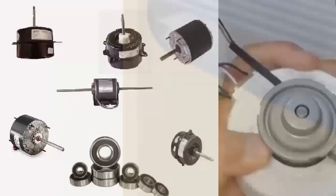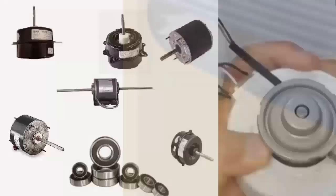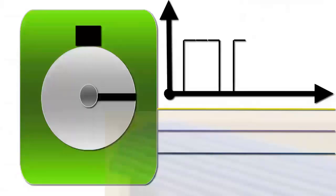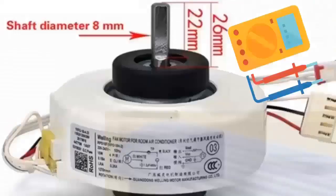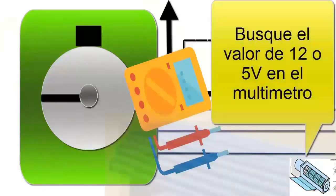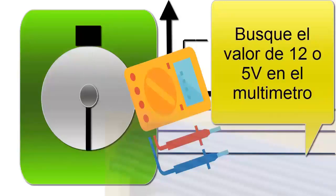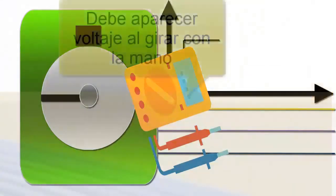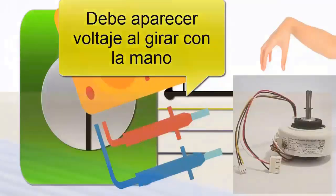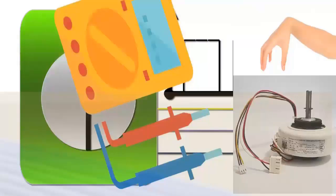3. Hall Effect Sensor Failure: Identify the Hall Effect Sensor cables, which are the three thin wires coming from the fan motor. Power the electronic board and measure voltages between the pins with a multimeter in DC mode. Identify the sensor's power and ground — when you get a constant positive voltage, the remaining third wire will be the sensor signal. Place the red multimeter probe on the signal wire and the black one on the previous spot.